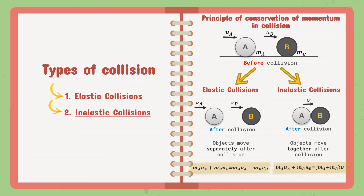The next case that could happen is inelastic collision, which means both objects A and B move together after the collision in the same direction. With the conservation of momentum formula: MA·UA plus MB·UB equals (MA plus MB)·V. Did you notice? For inelastic collisions, there is only one velocity — the velocity of object A and object B will be the same after the collision.